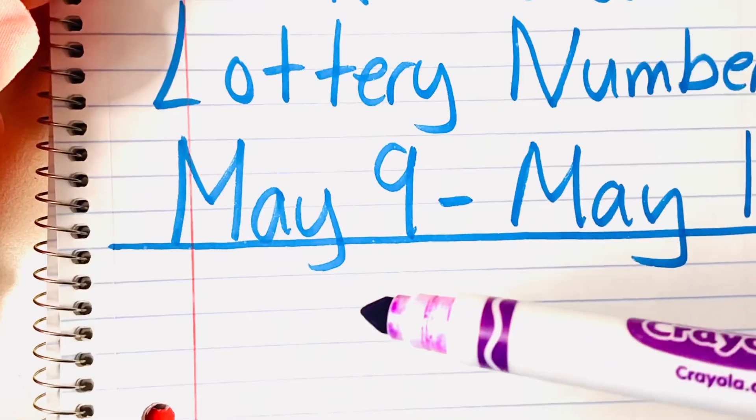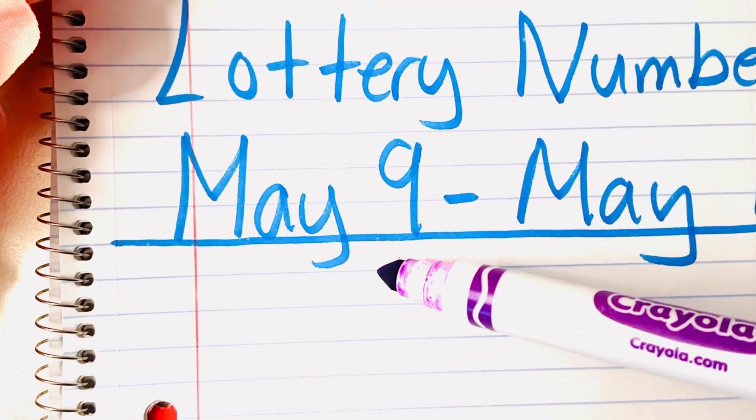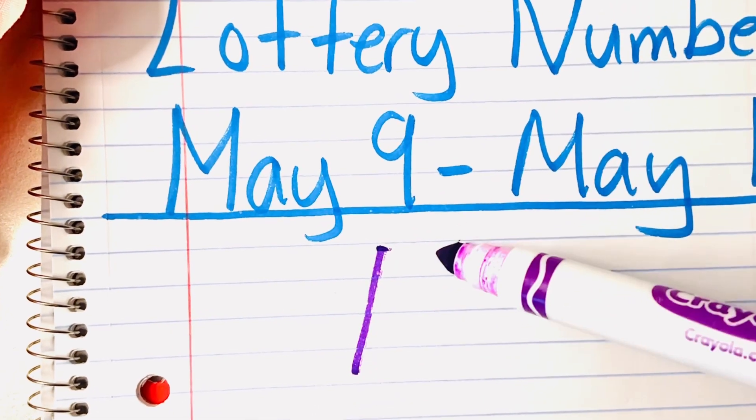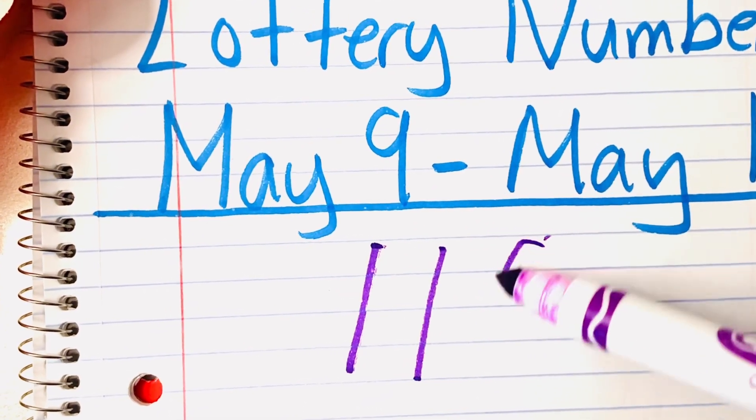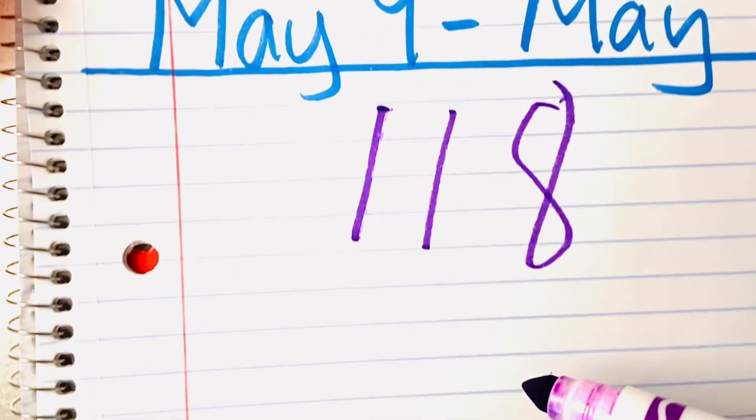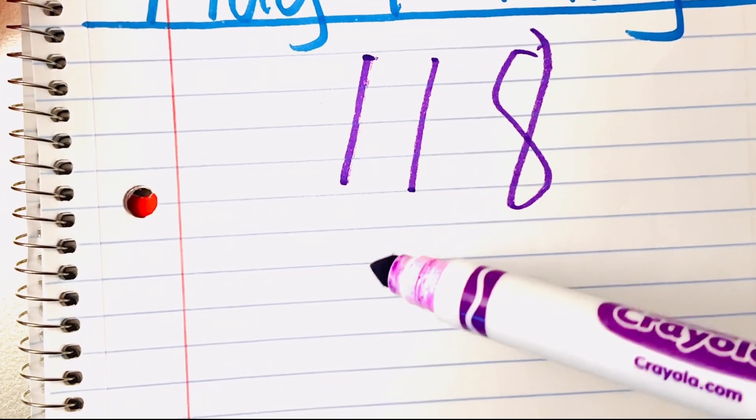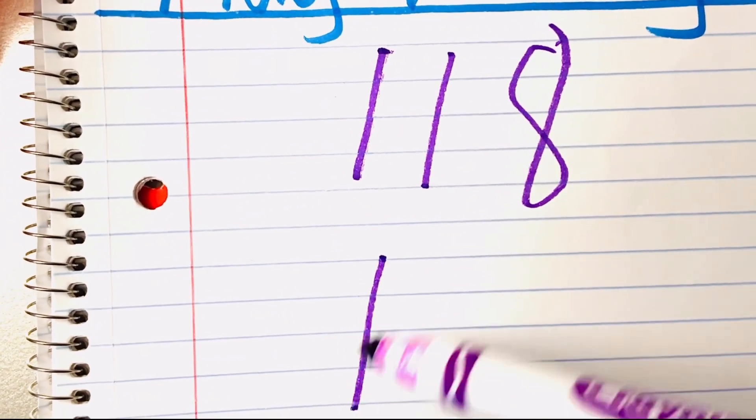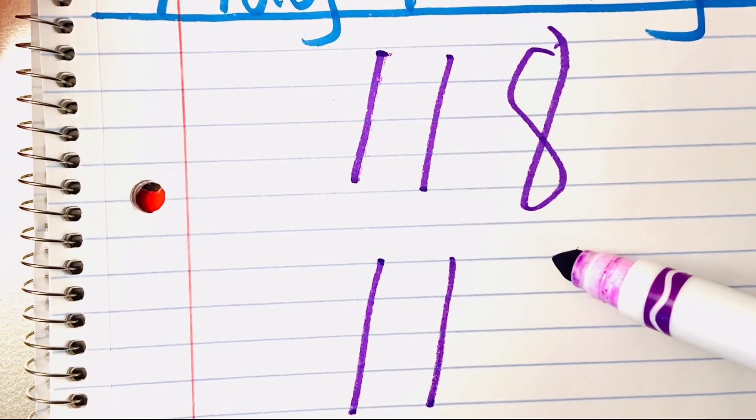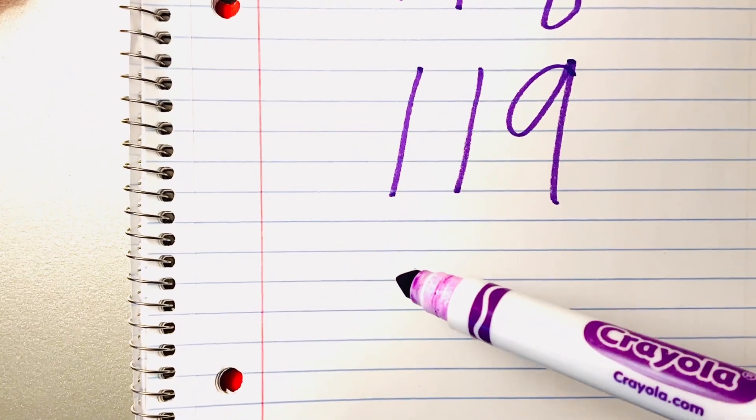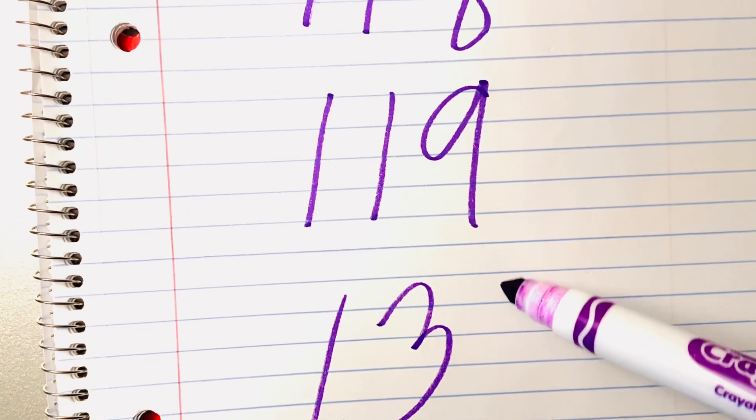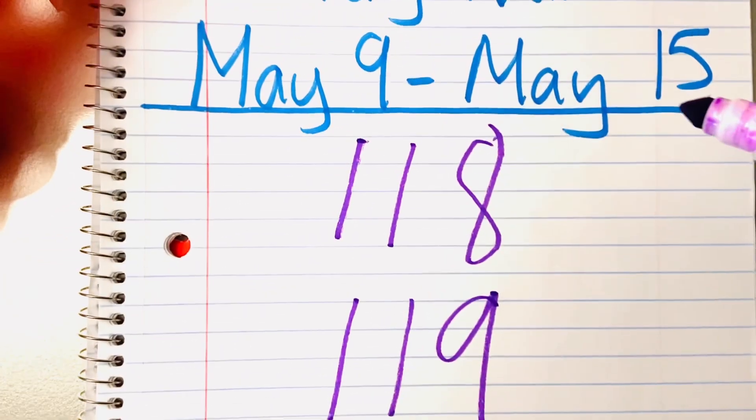So now moving on to our double ones. And the first number for our double ones is 118. And next I'm writing out 119. And our next double one number is 131.